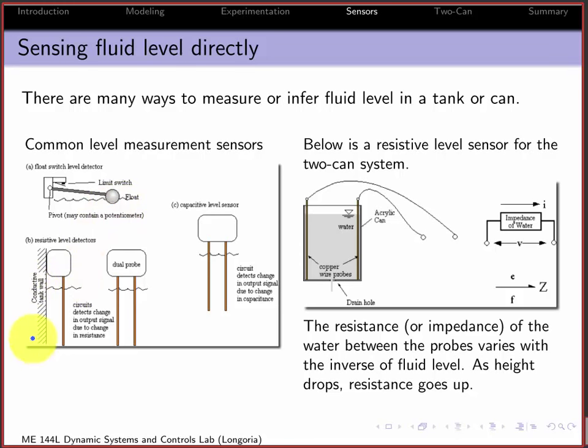You could do a float measure, there's capacitive sensors or resistive sensors, actually resistive is capacitive. You could measure the resistance of the water here and when that water level drops your resistance changes and you could infer level from resistance or from capacitance between two probes.